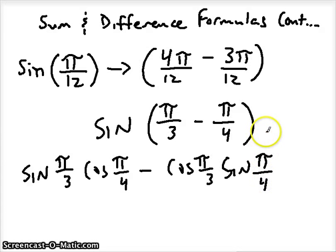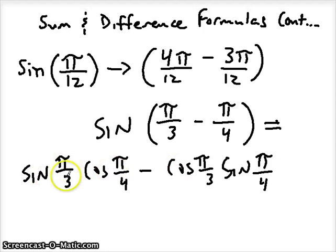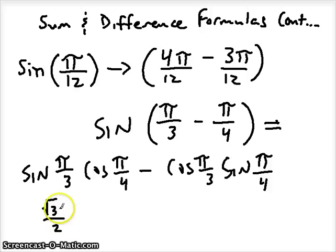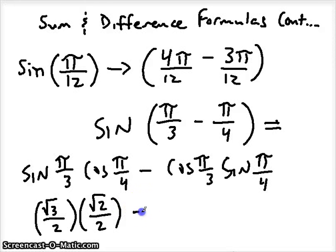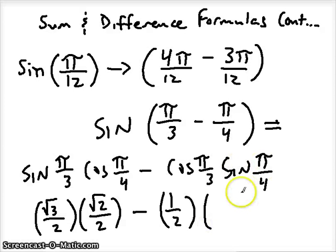We get the sine of pi over 3 times the cosine of pi over 4, minus the cosine of pi over 3 times the sine of pi over 4. That's using the formulas from the last video. Now evaluate each of these expressions: sine of pi over 3 is the y-value, which is square root of 3 over 2. Cosine of pi over 4 is square root of 2 over 2. Cosine of pi over 3 is 1/2, and sine of pi over 4 is square root of 2 over 2.